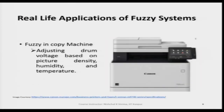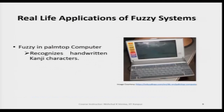Another application is the fuzzy controller based copying machine, where the drum voltage is adjusted based on picture density, humidity, and temperature. These parameters are expressed as linguistic terms — for example, humidity can be low, medium, or high — and the controller makes decisions based on that. We also see a fuzzy based palm top computer.